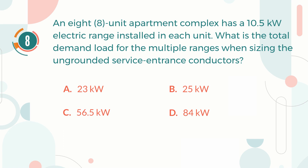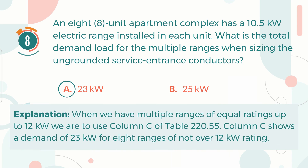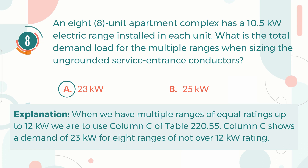The correct answer is A, 23 kW. Explanation: When we have multiple ranges of equal ratings up to 12 kW, we are to use column C of Table 220.55. Column C shows a demand of 23 kW for eight ranges of not over 12 kW rating.